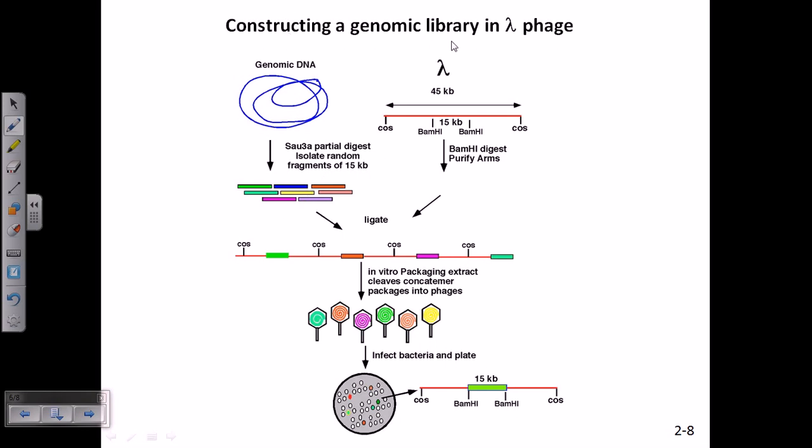First is the construction of a genomic library in lambda phage. We get this genomic DNA. The first thing is to digest this genomic DNA utilizing several restriction enzymes. Not a single type of restriction enzyme is used. Most of the time we use more than one type of restriction enzymes and digest into smaller segments.